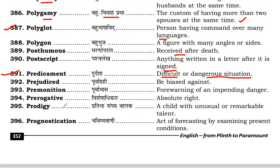Next is premonition. Premonition is when you feel that something will happen in the future before it occurs — a warning of an impending danger.